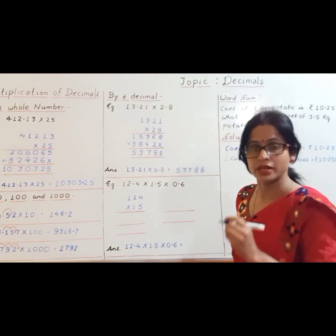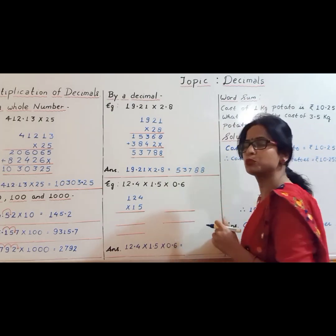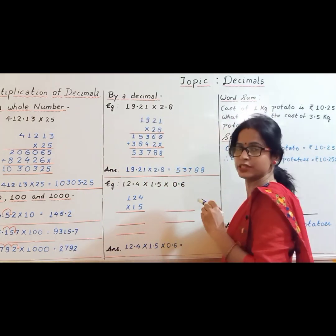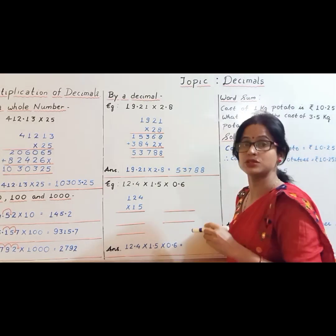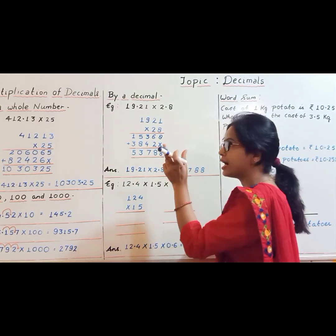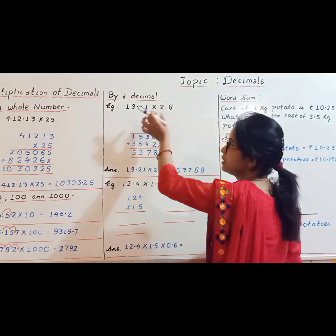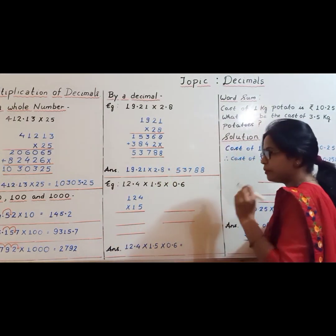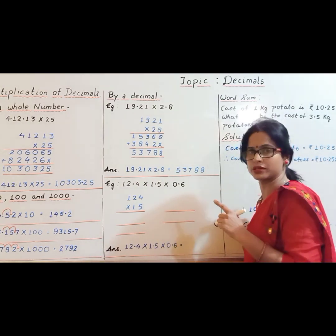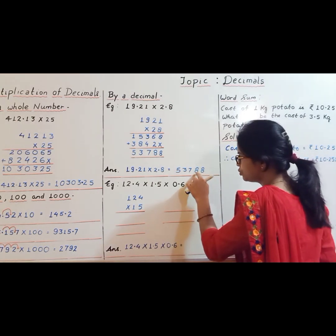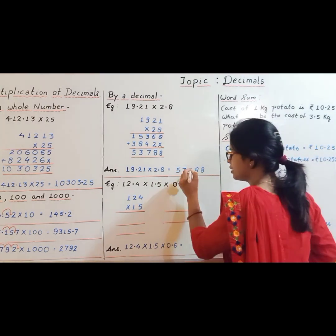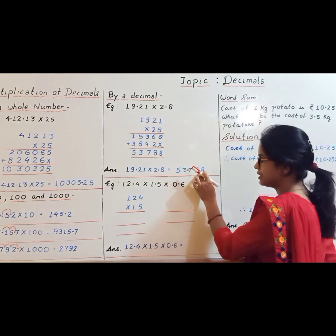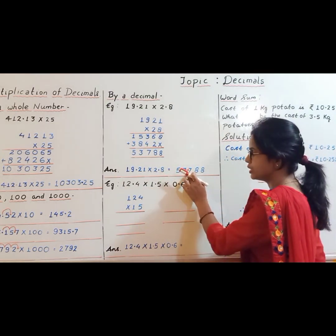Now the very important thing is how to put the decimal point in the product. Look here: the number of decimal places in 19.21 is 2, and in 2.8 it is 1. We have to add the decimal places: 2 plus 1 is 3. So the product must have 3 decimal places. Count from the right-hand side: 1, 2, 3, and put the decimal there. So the answer is 53.788.